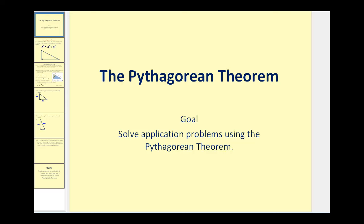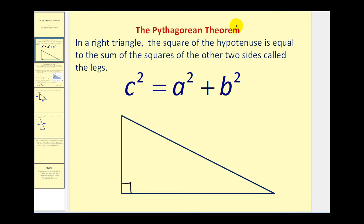Welcome to a quick tutorial on the Pythagorean Theorem. The Pythagorean Theorem states that in a right triangle, the square of the hypotenuse is equal to the sum of the squares of the other two sides, which are called the legs.